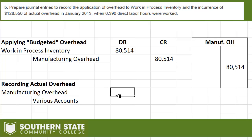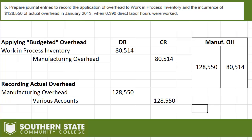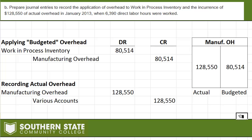For the second journal entry, the problem states actual overhead was $128,550. To record actual overhead, we debit Manufacturing Overhead and credit the various accounts that make up that number — wages, parts, and so on. Looking at the Manufacturing Overhead T-account: the debit side reflects what actually happened ($128,550 actual), and the credit side reflects what was budgeted/applied ($80,514). Since applied is less than actual, we have under-applied manufacturing overhead.